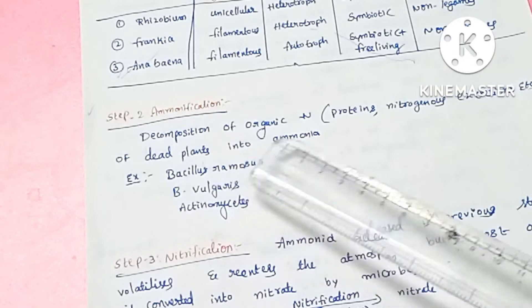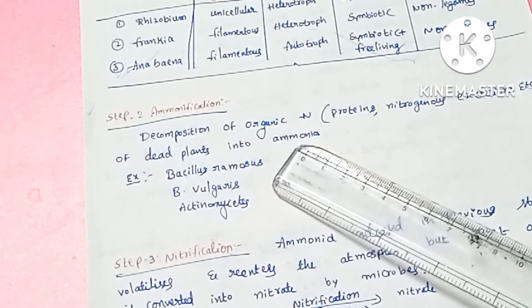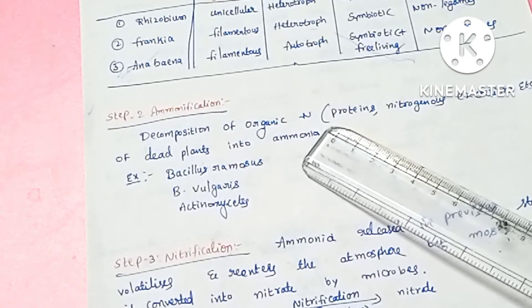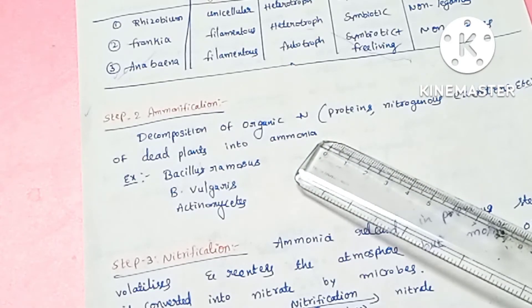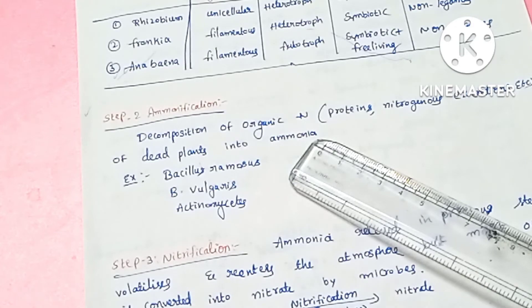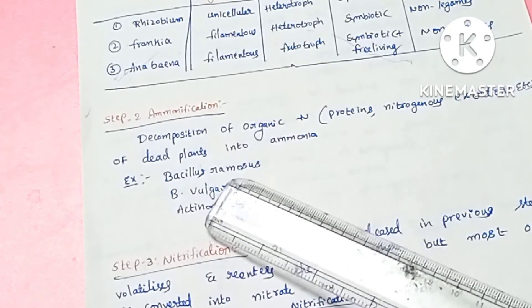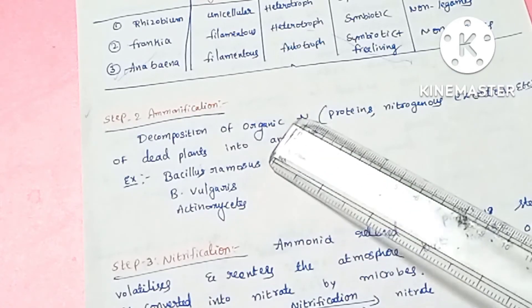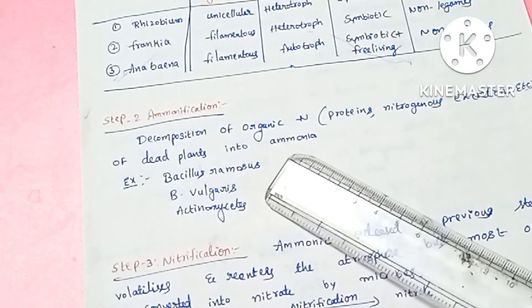The next important concept is Ammonification. Ammonification is the decomposition of organic nitrogen. In the organic form, nitrogen is converted through ammonification. In our body there is protein, and excretory products include nitrogen waste such as ammonia, urea, and uric acid. In human beings, urea is the main excretory material. Ammonia is also converted via ammonification. Bacteria involved include Bacillus ramosus, Bacillus vulgaris, and Actinomycetes.